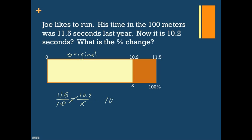100 times 10.2 equals 11.5x. 100 times 10.2 will give us 1020. So we end up with 1020 equals 11.5x.